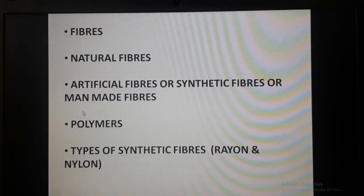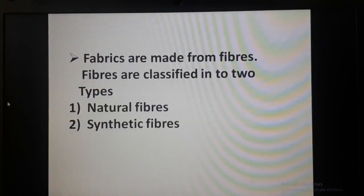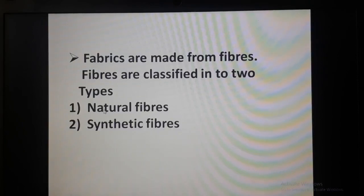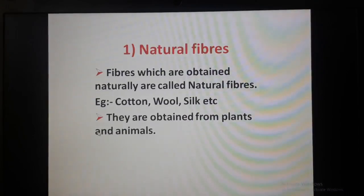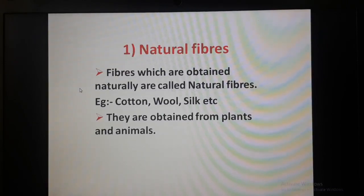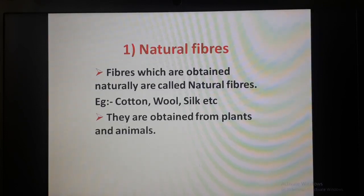What do we mean by fibers? The clothes we wear are made of fabrics, and fabrics are made from fibers. These fibers are classified into two types: natural fibers and synthetic fibers. Natural fibers are fibers obtained naturally — examples are cotton, wool, silk, etc. They are obtained from plants and animals, which is why they are called natural fibers.